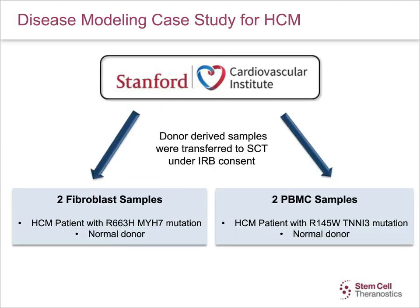For the disease modeling case study of HCM, fibroblast and PBMC samples were obtained from the Stanford Cardiovascular Institute. We had one HCM patient with R663H MYH7 mutation and a healthy donor, and one HCM patient with R145W TNNI3 mutation and a healthy donor.